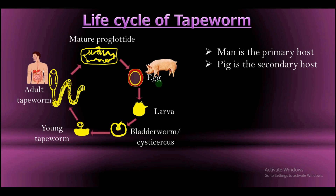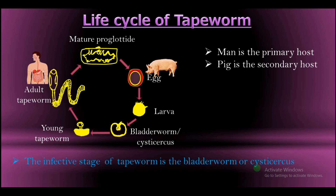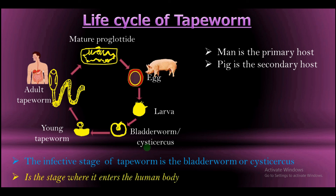Another important fact is that the infective stage of tapeworm is the bladderworm, or the cysticercus. The infective stage of any parasite is the stage where it enters the human body, and the stage where the tapeworm enters the body of man is the bladderworm stage. The bladderworm, also known as the cysticercus, is found in the muscles of the pig. So when man eats an undercooked pork meat, the bladderworm is automatically taken into the body of man, which then develops into the young tapeworm and grows into the adult tapeworm that attaches itself to the wall of the small intestine.